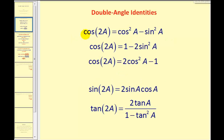There are three double angle identities for cosine. Cosine of two A is equal to cosine squared A minus sine squared A, or one minus two sine squared A, or two cosine squared A minus one. For sine and tangent there is only one double angle identity each. Sine two A equals two times sine A times cosine A. Tangent two A equals two times tangent A, all over one minus tangent squared A.